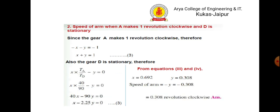For Case 2, speed of arm when a makes one revolution clockwise and d is stationary: since gear a makes one revolution clockwise, minus x minus y equals minus one. Since gear d is stationary, x multiplied by ta by td minus y equals zero. Solving for x and y and finding the speed of the arm gives 0.308 revolutions clockwise.